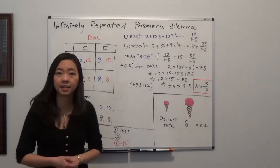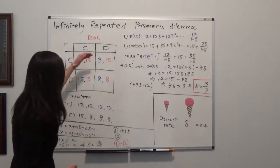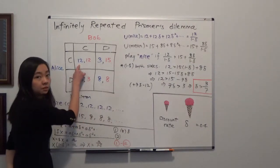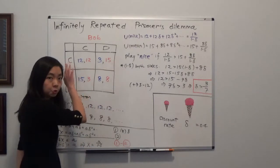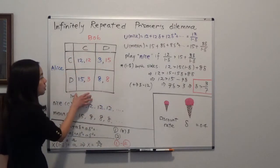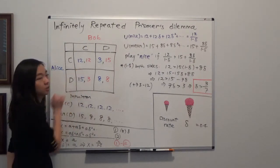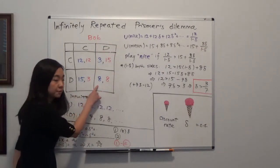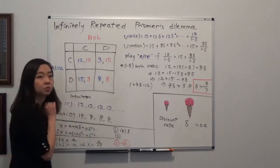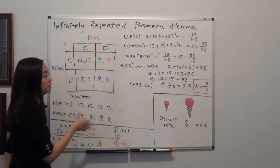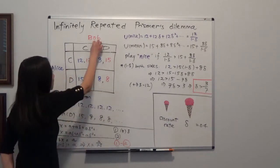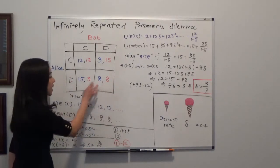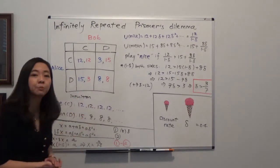We already know that if this game is played only once, each player has a dominant strategy, which is to defect. Defect is always better regardless of what the other person does. If Bob cooperates, Alice defects because 15 is higher than 12. If Bob defects, Alice still defects because 8 is better than 3. So Alice's dominant strategy is defect — same for Bob since the game is symmetrical. They both end up with utility 8, and that's the Nash equilibrium: defect, defect, payoff 8.